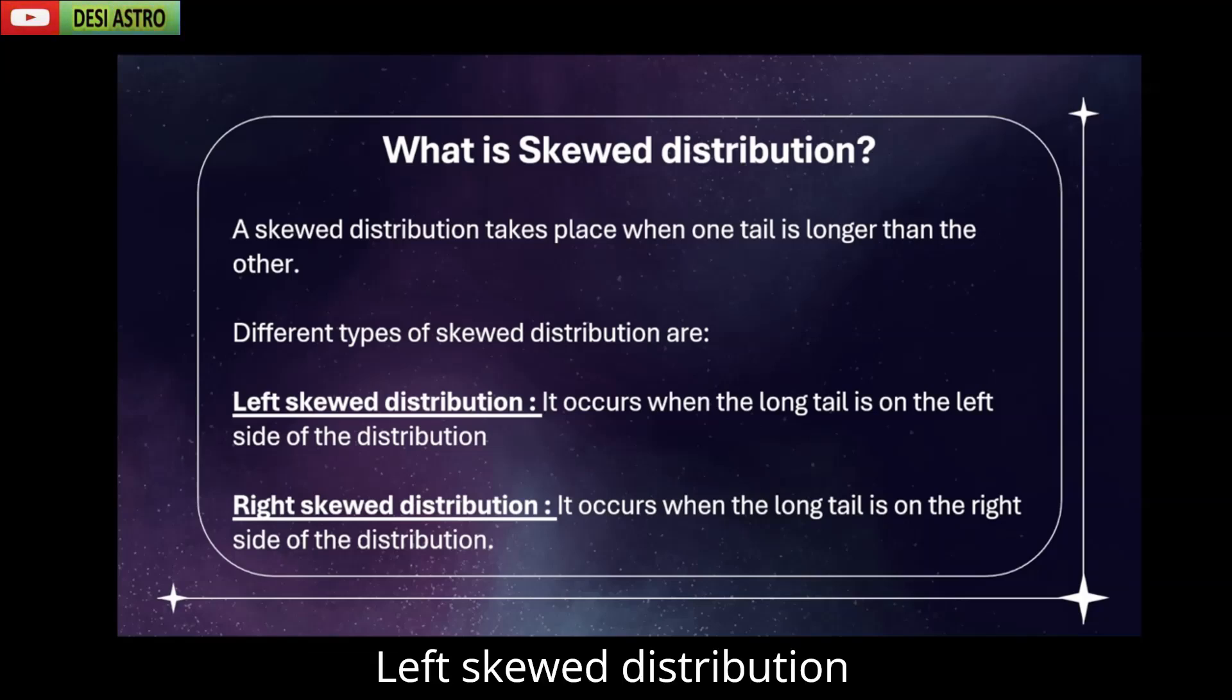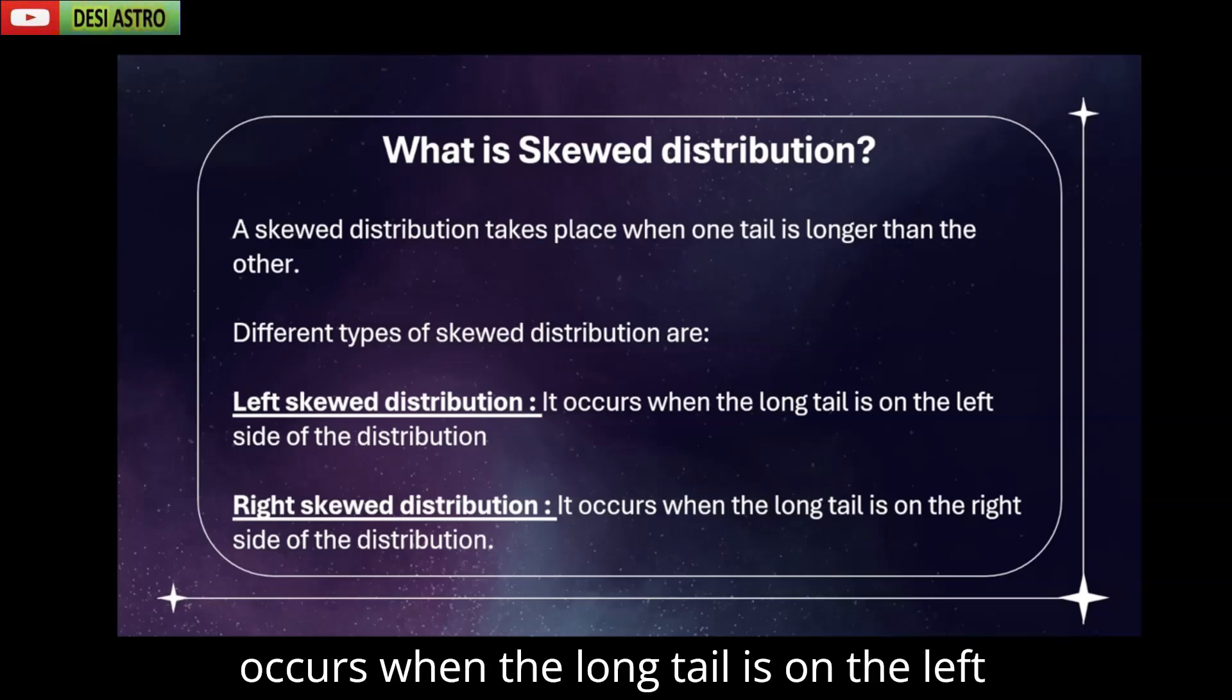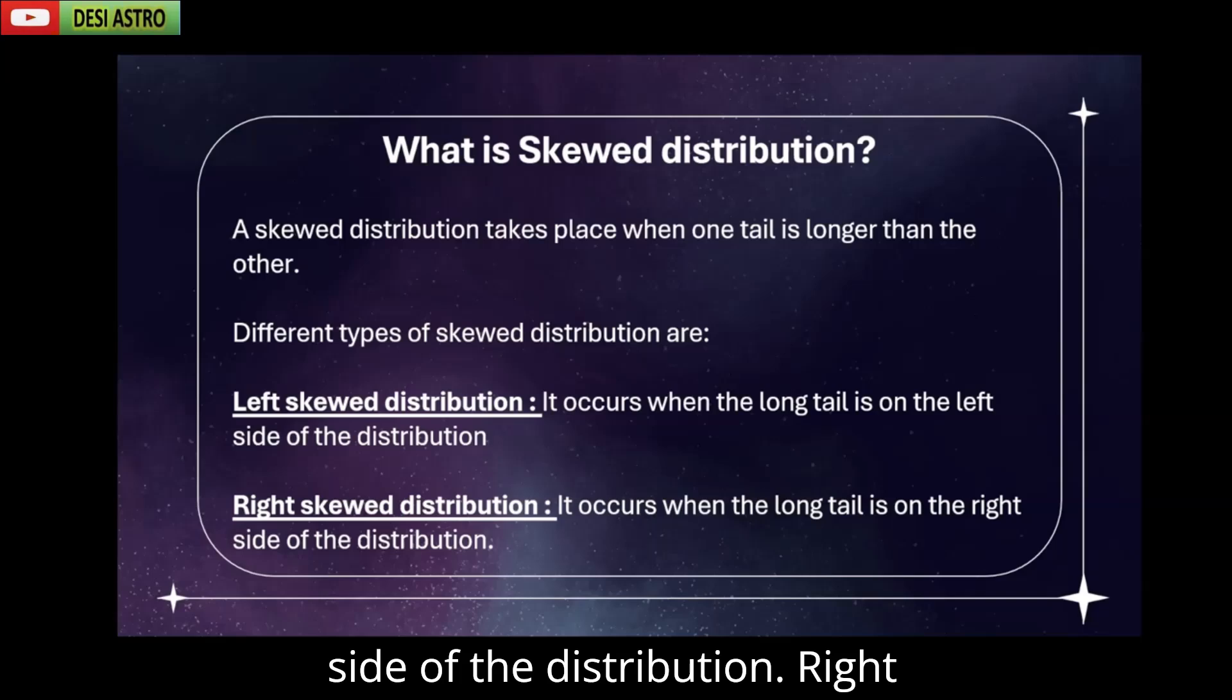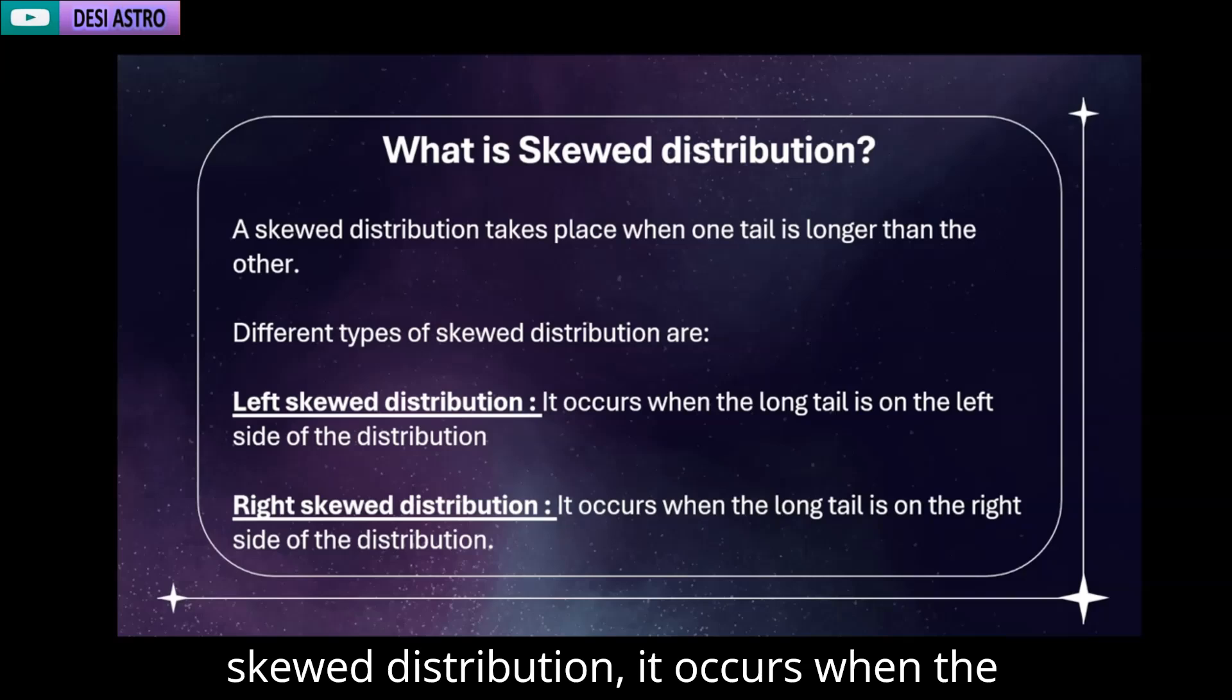Left skewed or negative skewed distribution occurs when the long tail is on the left side of the distribution. Right skewed or positively skewed distribution occurs when the long tail is on the right side of the distribution.